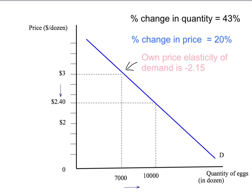A couple of points to note here. First, note that the elasticity of demand at the price of $3 is significantly different from the elasticity of demand at a price of $2.40, even though this is a straight line or linear demand curve. That's a general result: for most demand curves, the elasticity of demand will change as we move along the demand curve. So when you're talking about the elasticity of demand, you have to talk about a specific point on the demand curve — the elasticity at $3 will be different to the elasticity at $2.40.